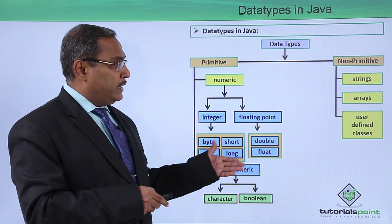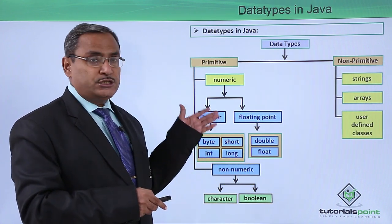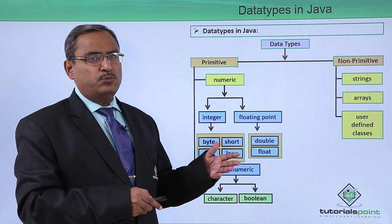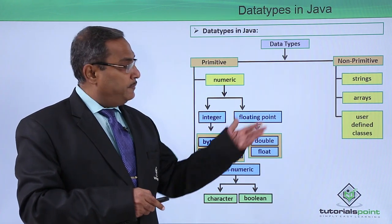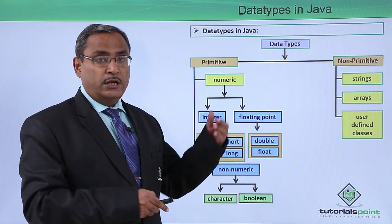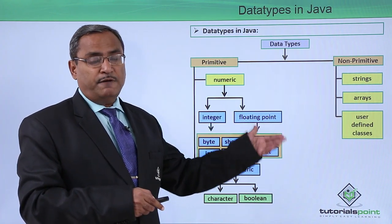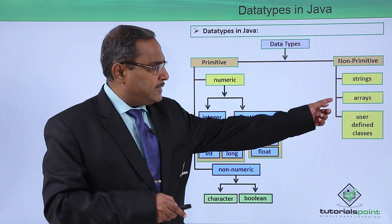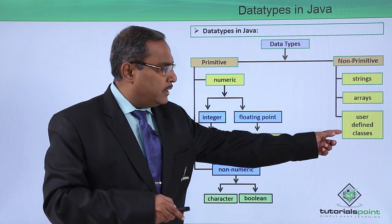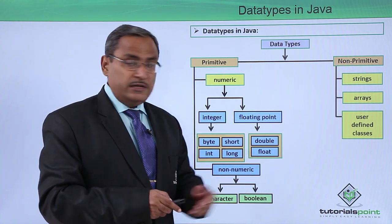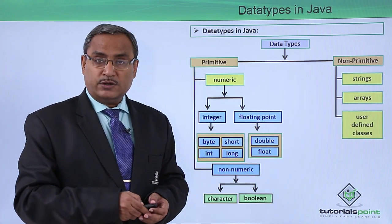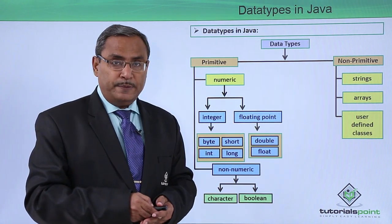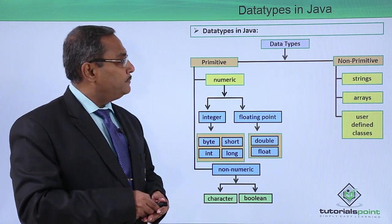In this way, we have non-primitive data types: string is one of them, defined with the help of the String class. We also have arrays, and user-defined classes can also be used as non-primitive data types.